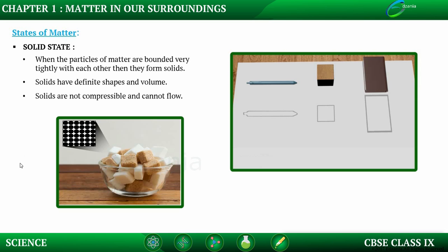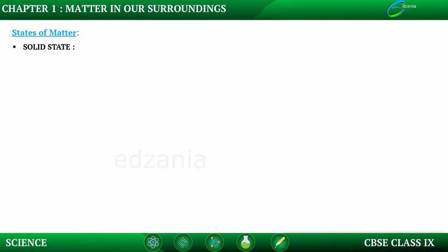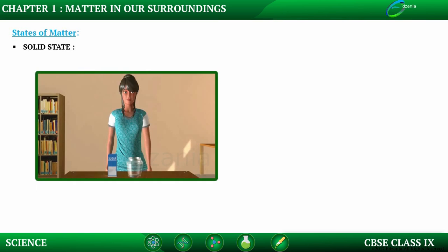Thus, solids have definite shapes and volumes, and they are not compressible and cannot flow. There exist some solid state matters which do not have similar properties. For example, sugar or salt takes the shape of the jar in which they are kept. Both sugar and salt are solid in nature.